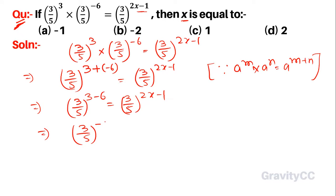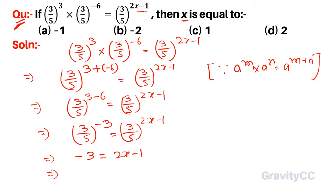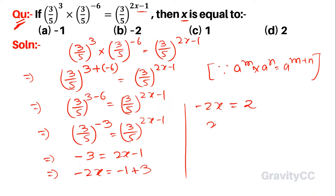So (3/5)^(-3) equals (3/5)^(2x-1). Since the bases are equal, the powers must be equal. This implies minus 3 equals 2x minus 1, so minus 2x equals minus 1 plus 3, giving minus 2x equals 2, so x equals 2 divided by minus 2, which gives x equal to minus 1. Option A is the correct answer.